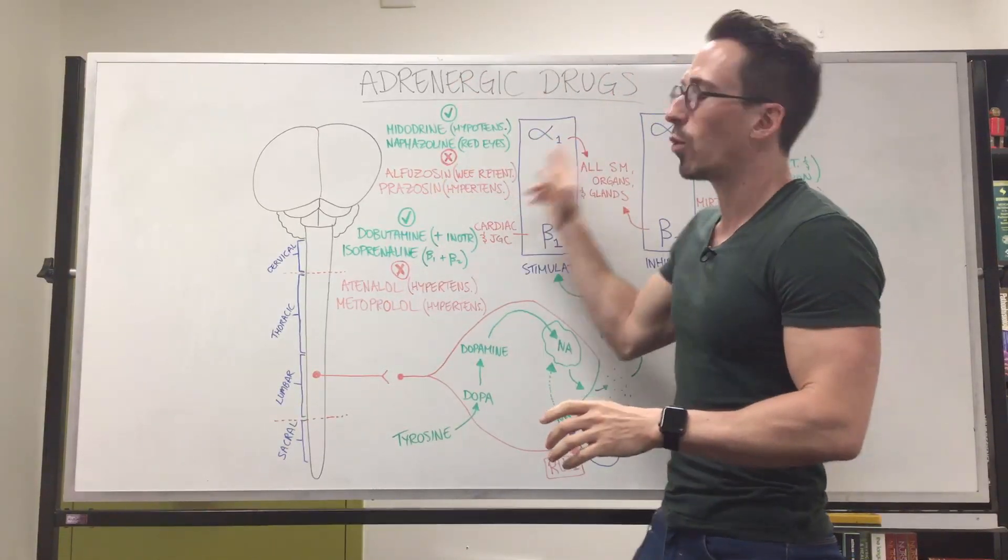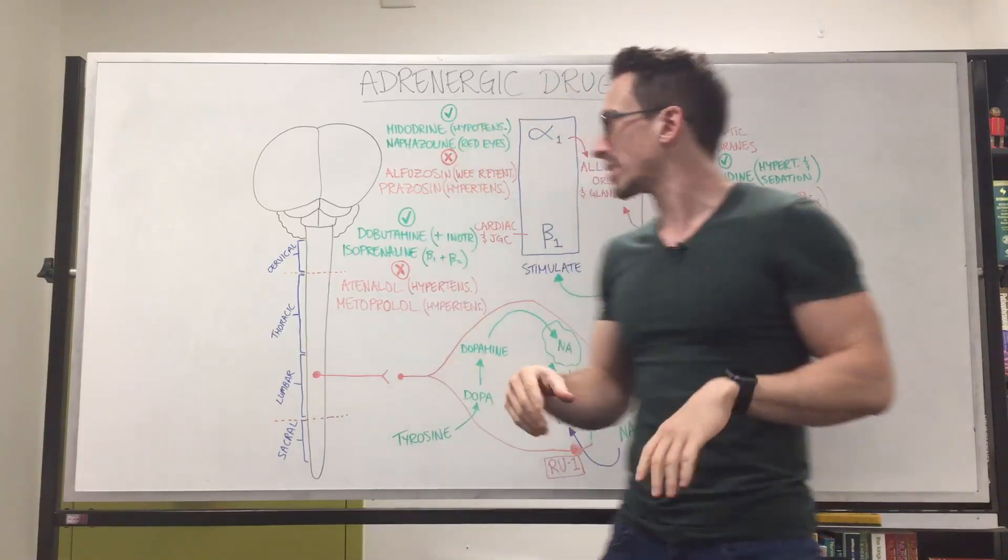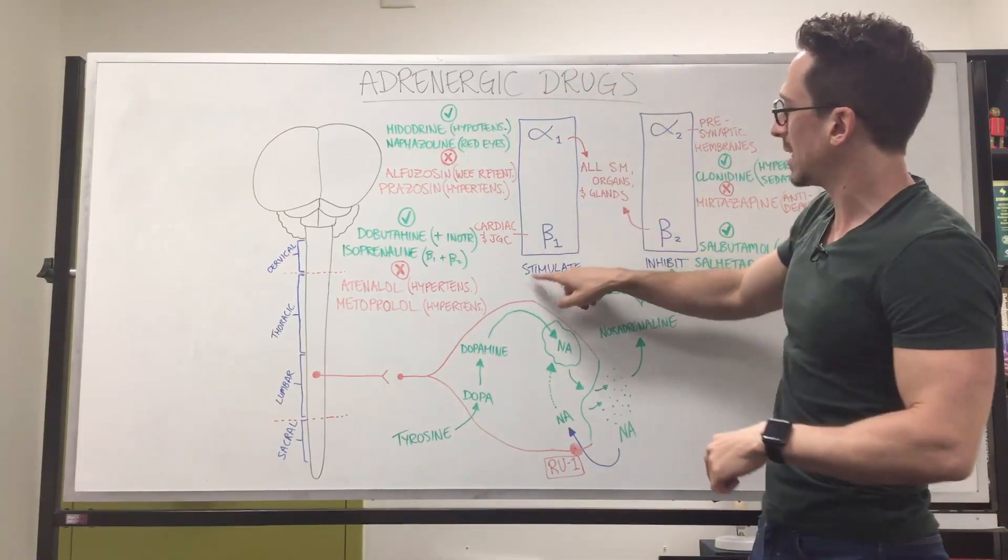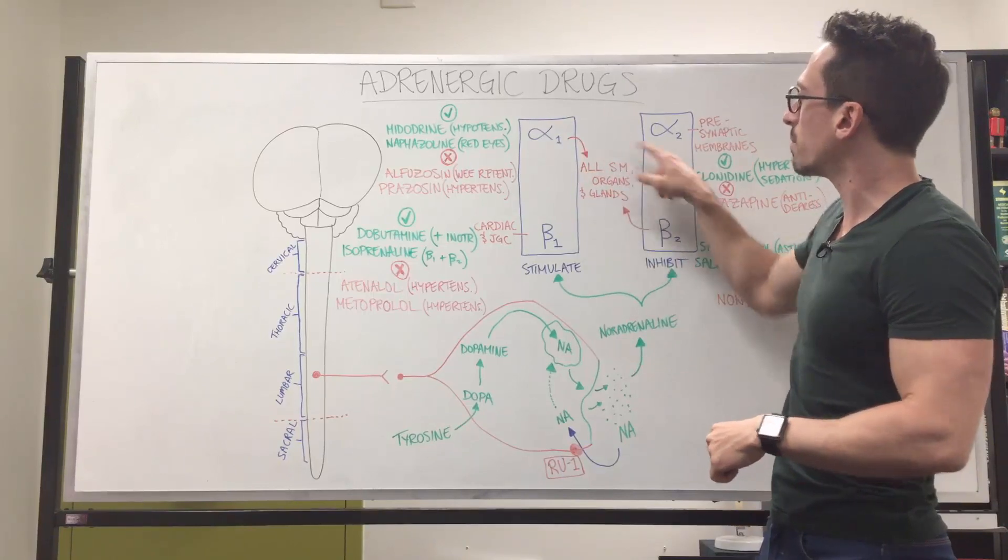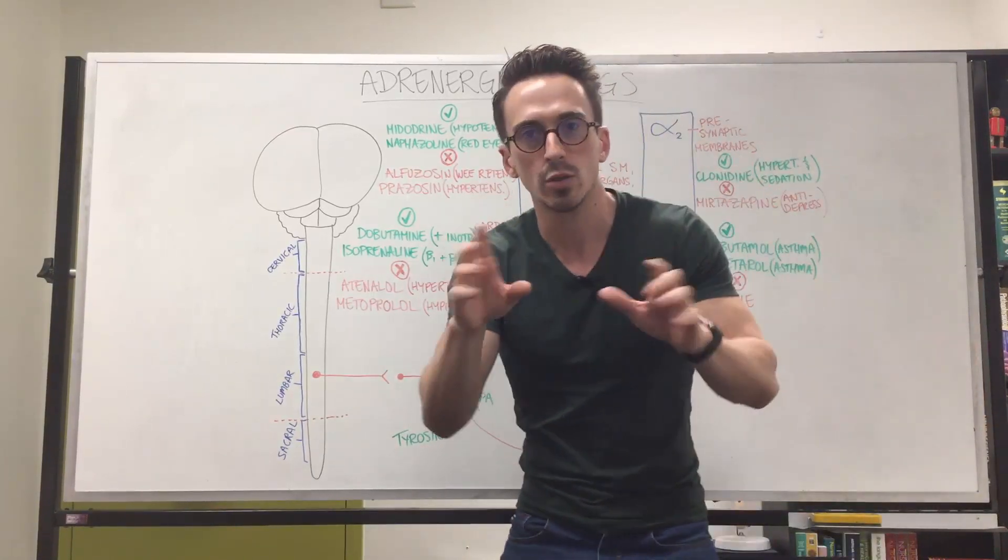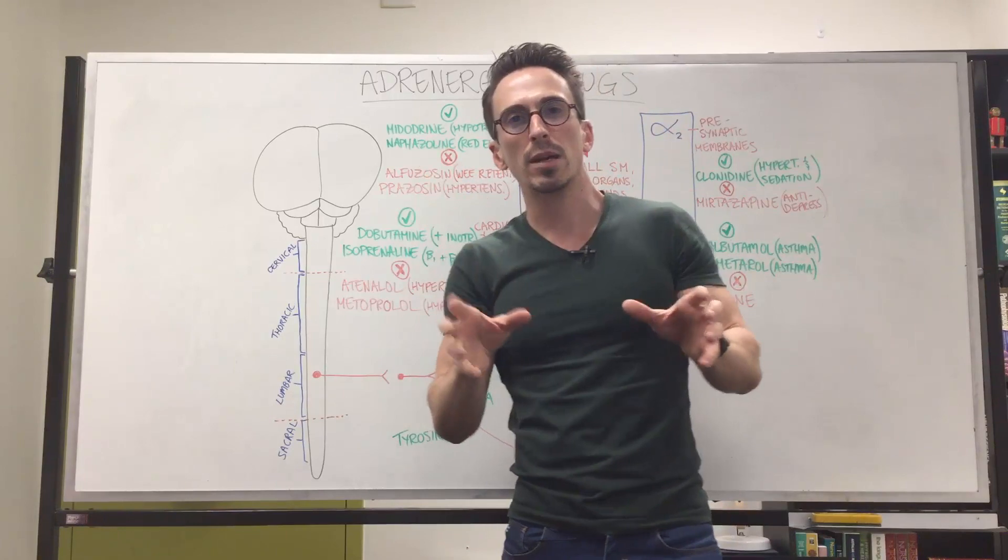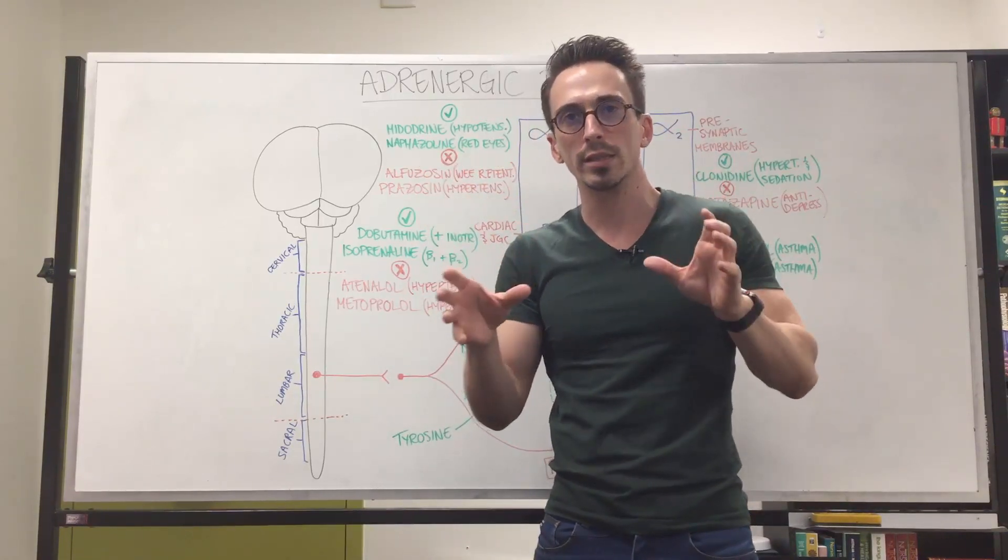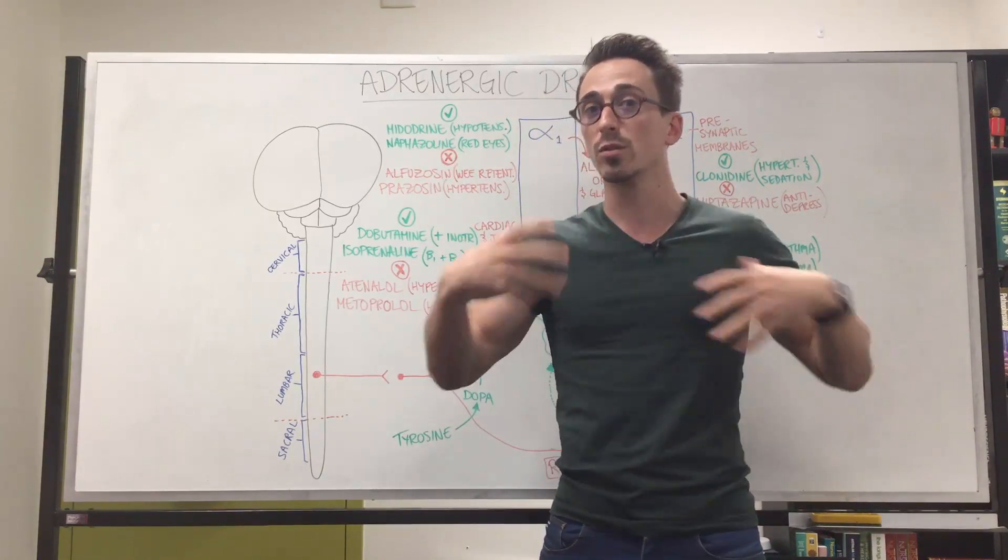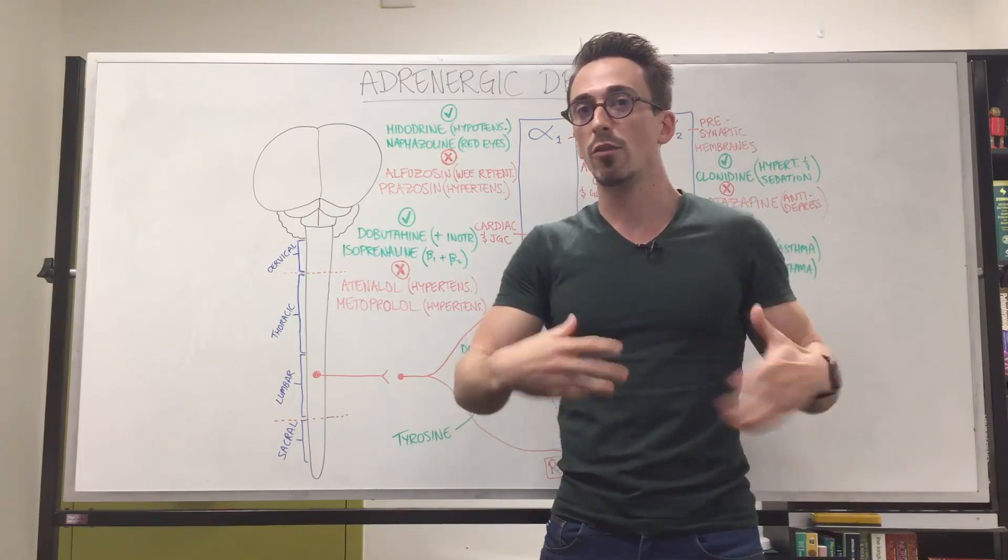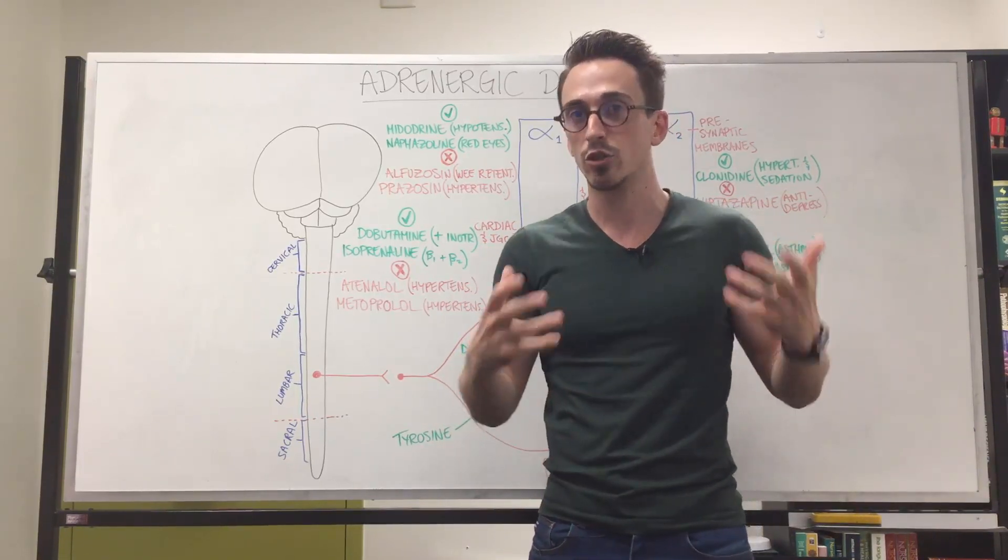First of all if we look at alpha-1, remember the role of alpha-1 receptors is it stimulates all smooth muscle and organs and glands. So think of the smooth muscle. Where is smooth muscle? This is muscle that lines the inside of hollow organs. That includes our blood vessels, that includes our urinary tract, it includes our digestive tract as well.